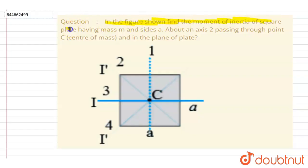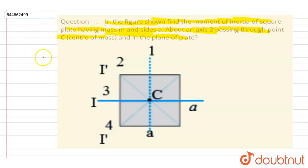Find the moment of inertia of the square plate having mass m and side a about an axis passing through the point C and in the plane of the plate. We know that the moment of inertia of this square plate about an axis passing through point C and perpendicular to this plane is ma²/6.